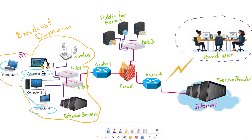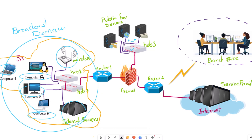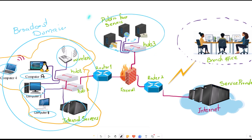What is a broadcast domain? For example, if computer A would like to send a broadcast message, all connected devices on the network will receive that message. So if a broadcast message is received by all devices on the network, that area is called a broadcast domain. When using hub devices to connect network devices, all devices are in one broadcast domain.